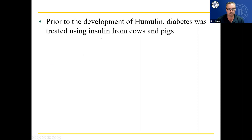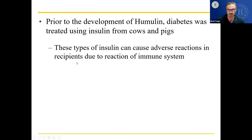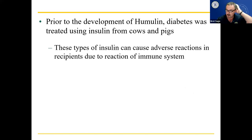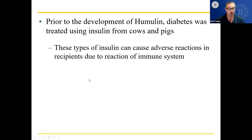Prior to the development of humulin, diabetes was treated using insulin from cows and pigs — extracted from slaughtered animal blood. These types of insulin can cause adverse reactions due to immune system responses. If there's ever a slide that doesn't correspond to your lecture notes, just take it as an FYI — something you should know but not likely on the test, since test questions are based on the review questions.